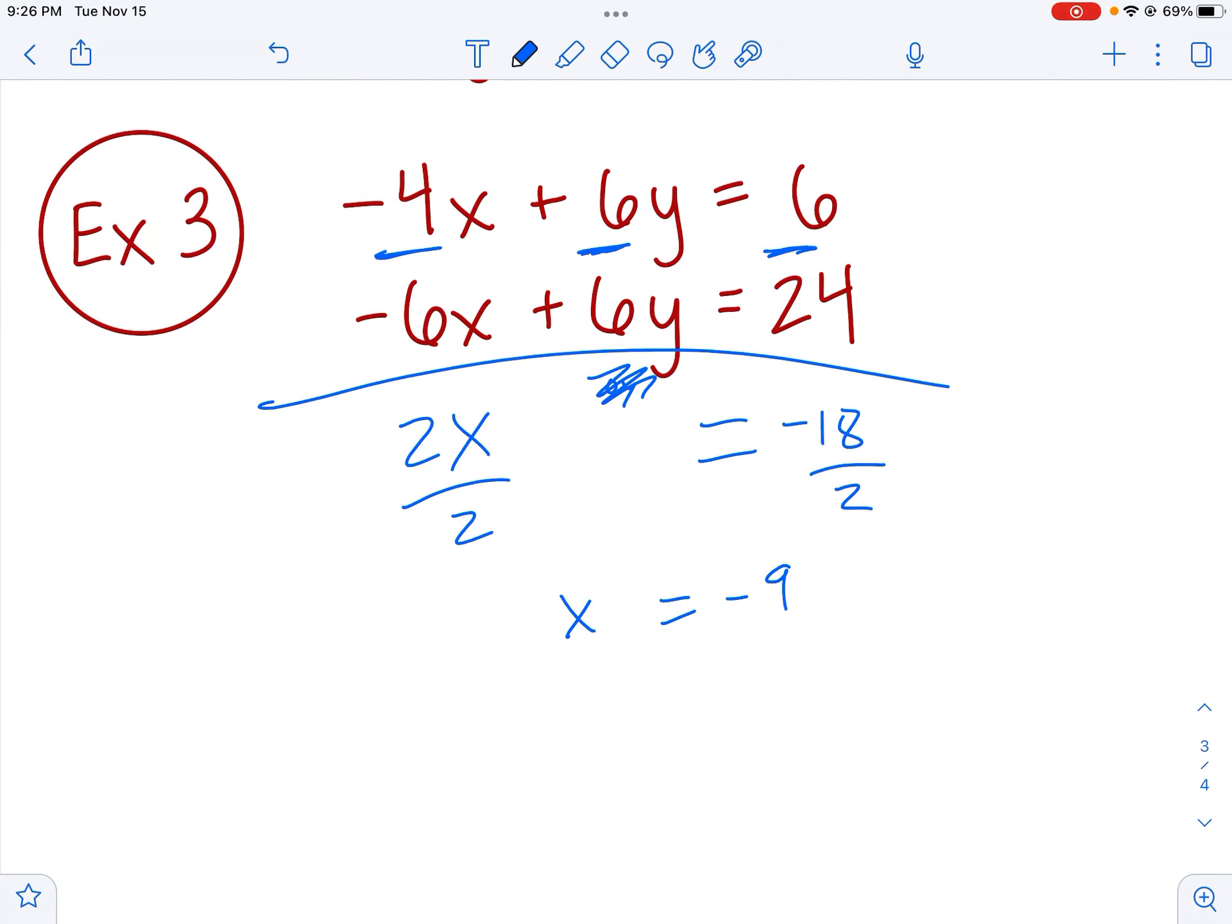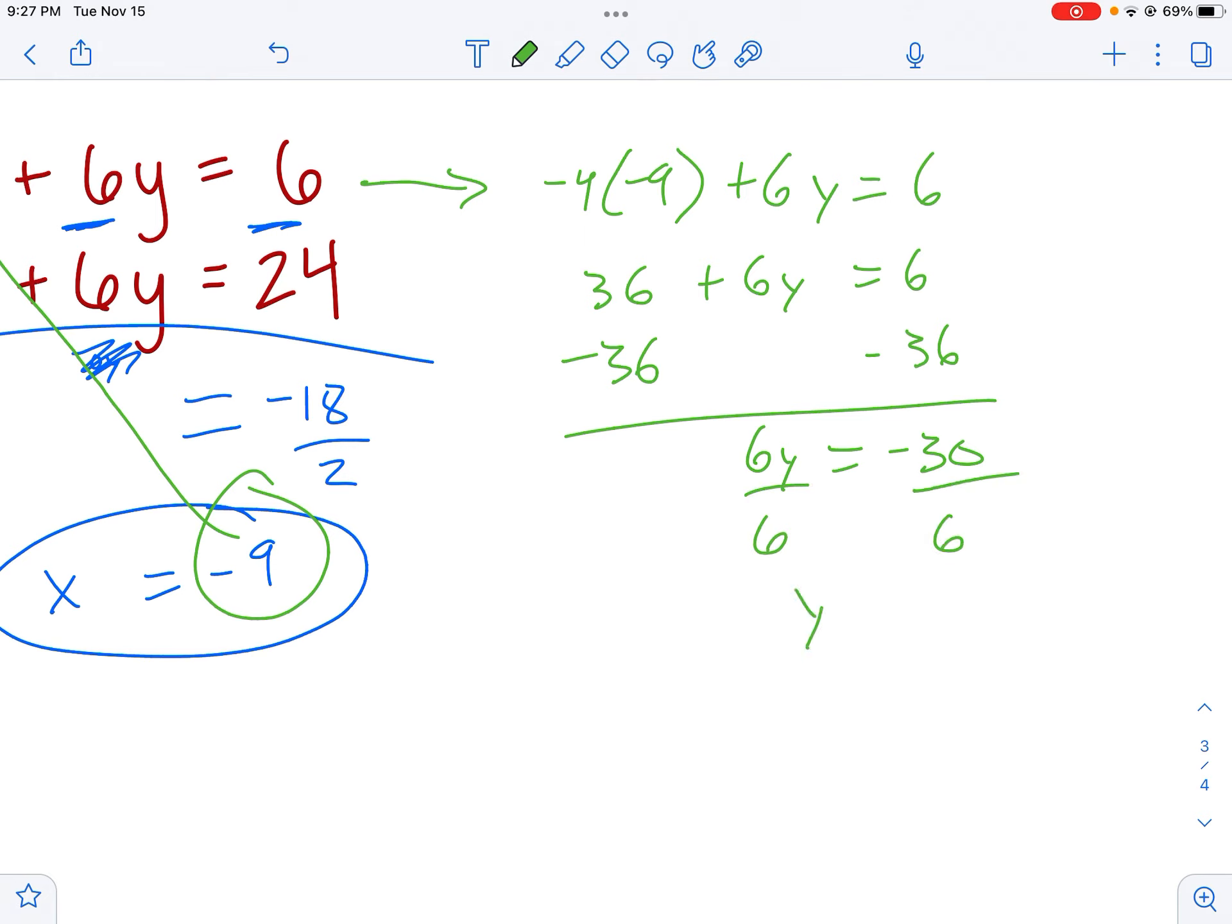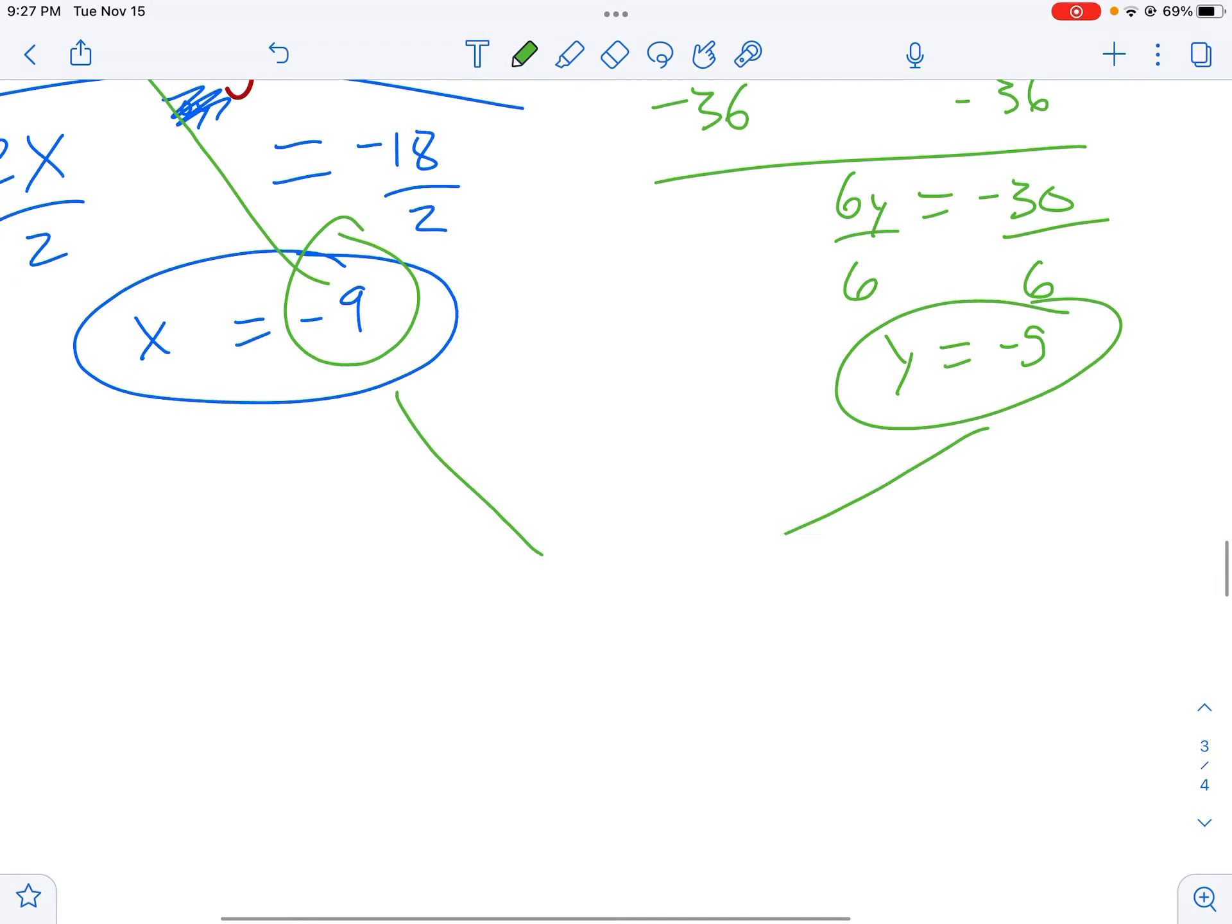So that's an important thing about these is sometimes you're going to add your equations. Sometimes you want to subtract them. Whatever will eliminate a variable is what you want to do first. So we got my x value. Let's go ahead and get a y value here. I'm going to take this and I can plug it into either of my equations for the x value. Remember, we got the x here. I like negative 4 instead of negative 6. So I'm going to put it here. So I'm going to come here. Right now, what do I get? I got negative 4 times negative 9, once again in parentheses, plus 6y equals 6. Negative 4 times negative 9 is positive 36. And I'm going to subtract 36 here. And I got 6y equals negative 30. And I can finish solving that. Just divide both sides by 6. And I got y is negative 5. All right. I got my two numbers. Negative 9 and negative 5. And I can write out my point here. Awesome.